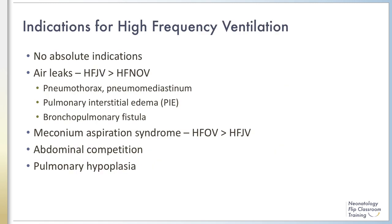There are no absolute indications for high-frequency ventilation. Some providers use it as primary ventilation, whereas others use it as a rescue strategy if conventional ventilation cannot achieve adequate gas exchange. The most common indications for jet ventilation are air leak syndrome, such as pneumothorax and pulmonary interstitial emphysema. High-frequency oscillating ventilation is frequently used for meconium aspiration syndrome. It can also be used in patients with high intra-abdominal pressure or pulmonary hypoplasia, where maintaining stable PEEP without collapse between breaths is advantageous.